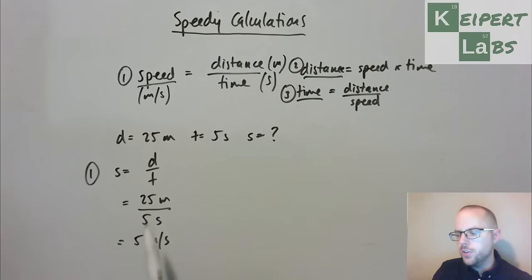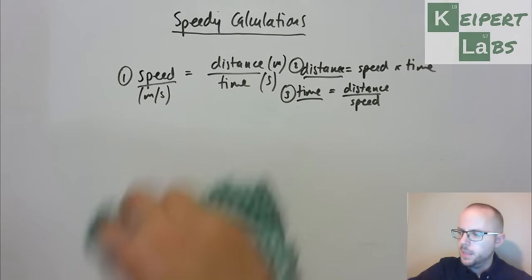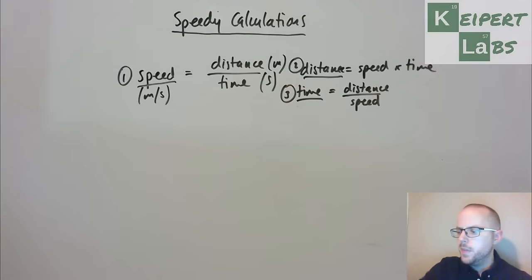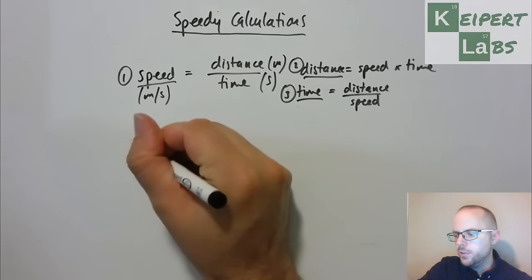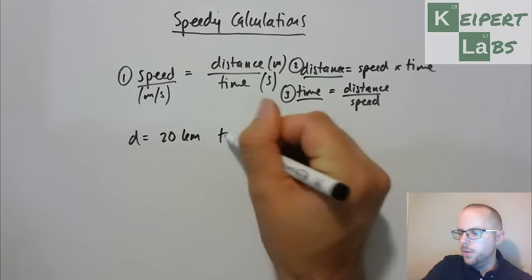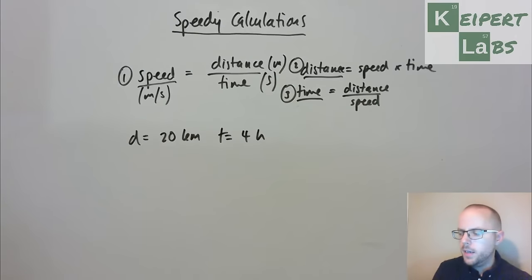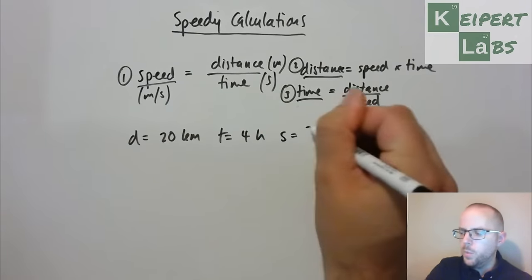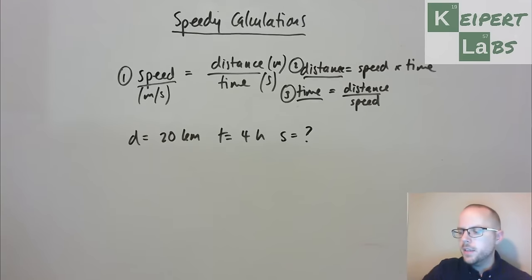Again, hopefully you could do 25 divided by 5 with confidence in your head, but you could calculate it if you wanted to be certain. So now let's look at, like I was saying, that we can express speed in some different units. So let's look at our cyclist who travels a distance of 20 kilometres in a time of 4 hours, and then trying to work out what's our speed, the cyclist's speed.